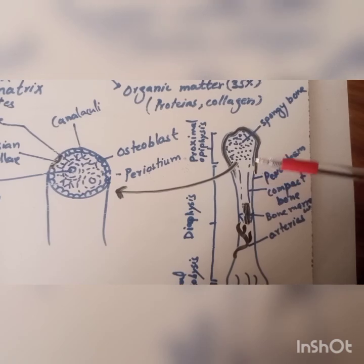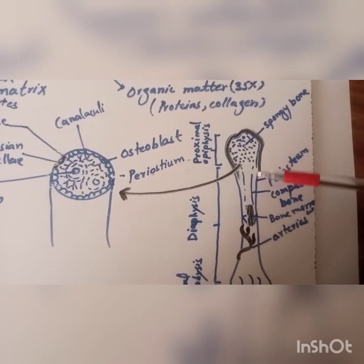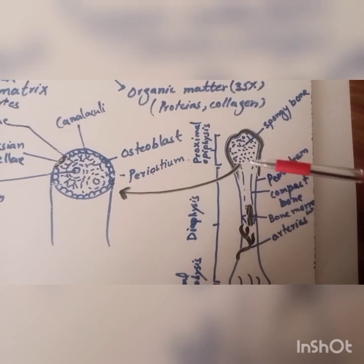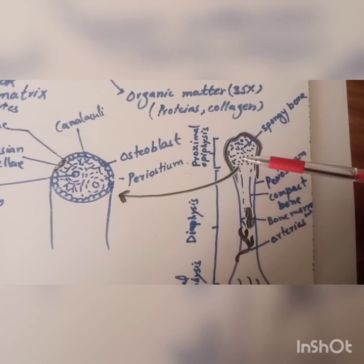The outer portion is compact bone, while the inner is spongy bone, that is a porous structure.